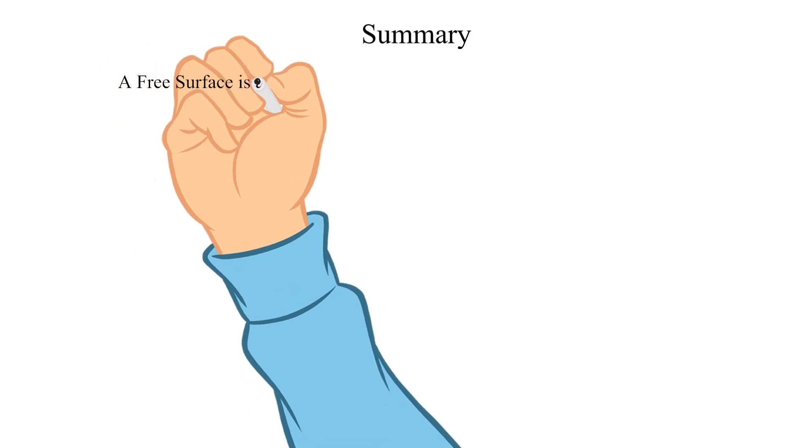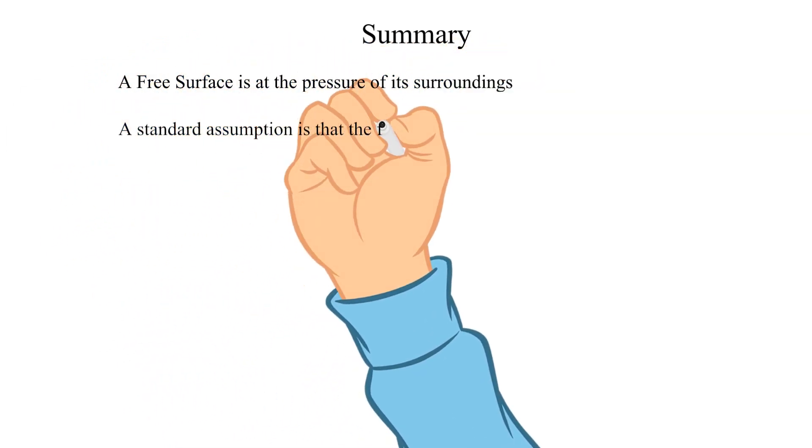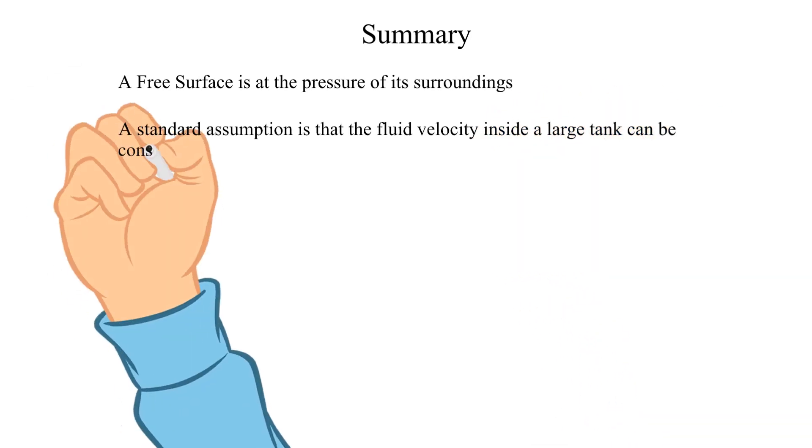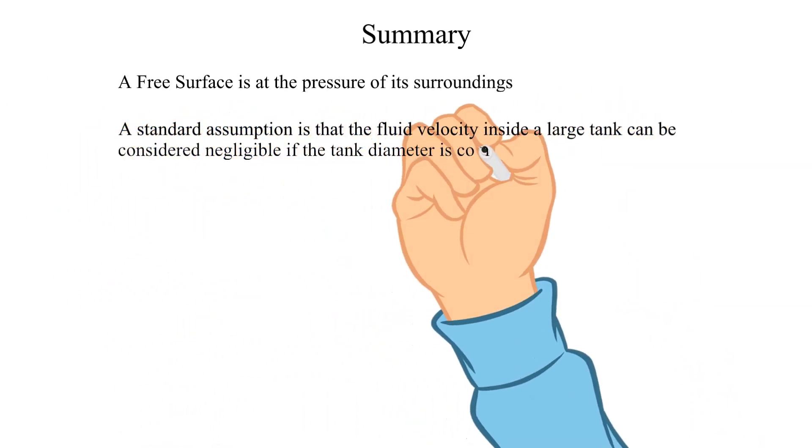Summary: A free surface is at the pressure of its surroundings. A standard assumption is that the fluid velocity inside a large tank can be considered negligible if the tank diameter is comparatively large.